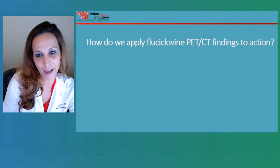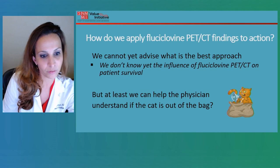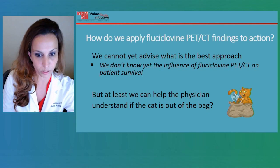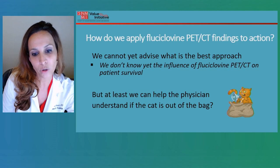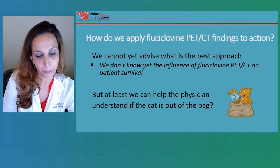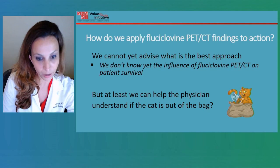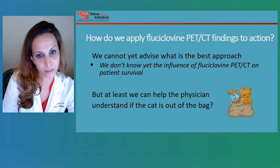So how do we apply all those fluciclovin PET-CT findings to action? That's a great question. Unfortunately, because the FDA approved the study and it went into clinical management, less concentration on prospective studies was placed, and we cannot really advise what the best approach is with these results. We don't really know yet — and I say yet because it's just recently approved. We don't yet know the influence of fluciclovin on patient survival. After we know where the disease is, we need to take action accordingly, and we don't know if that action will actually lead to better survival. But at least we can tell the physician whether the disease is within the pelvis or outside of the pelvis.